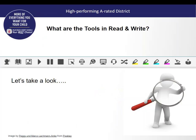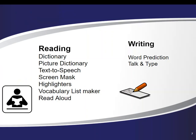So what are these tools that we're talking about? There are a variety of features including reading and writing. We have a dictionary, a picture dictionary, text-to-speech, something called screen mask, highlighters for studying, a vocabulary list maker, and the ability to have students read aloud and send it to you in a file. In writing, we have word prediction and talk and type that assist students who struggle with writing.